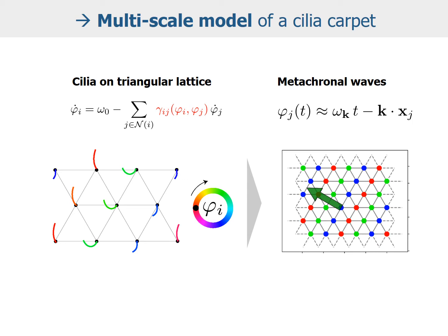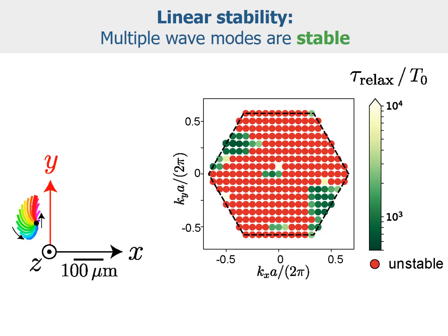We can then ask, for each possible metachronal wave — for each possible traveling wave with wave vector k — will this particular wave mode be stable with respect to small perturbations? We obtain a whole zoo, a so-called Brillouin zone of wave vectors, where each point corresponds to a different metachronal wave. The center of this hexagon corresponds to an in-phase synchronized state where all cilia move in unison. Any other point, like in this green island, corresponds to a traveling wave, and we show wave direction relative to the direction of the effective stroke of the cilia beat, aligned along the vertical y-axis.